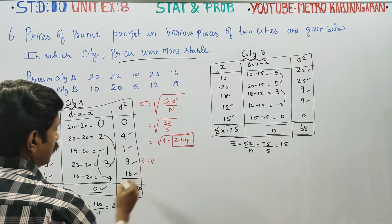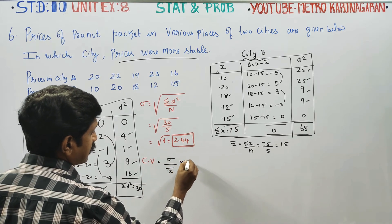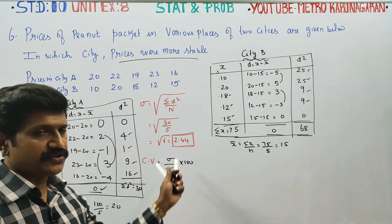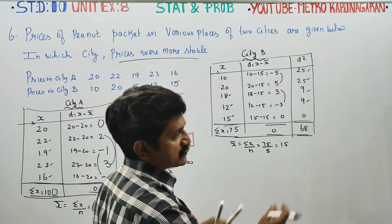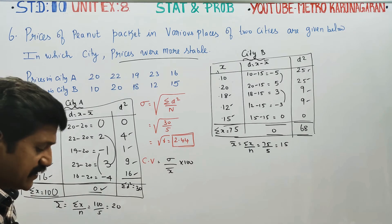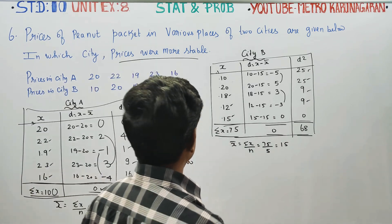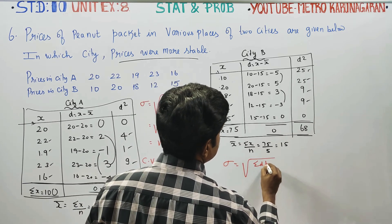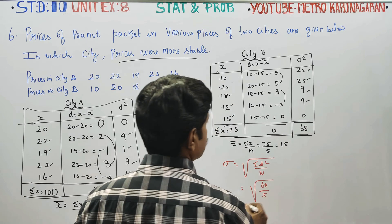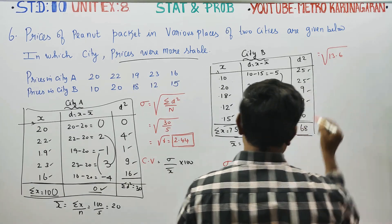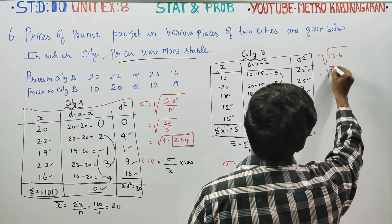The coefficient of variation formula is: CV equals sigma divided by x̄ multiplied by 100. For City A: CV equals 2.44 by 20 into 100, giving 12.20. For City B: σ equals square root of 68 by 5 equals square root of 13.6, which is approximately 3.68. CV for City B equals 3.68 by 15 into 100, giving approximately 24.53.